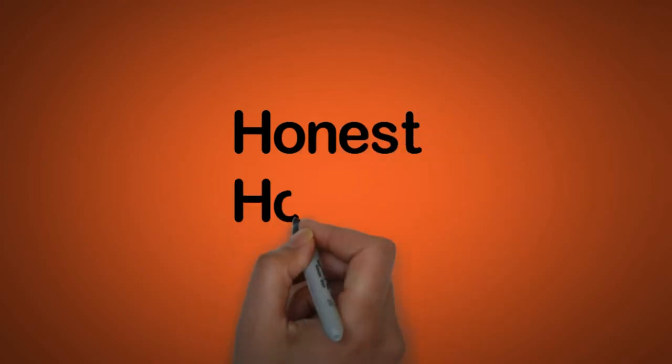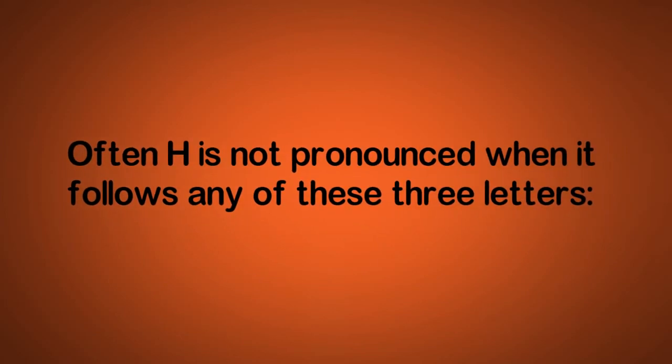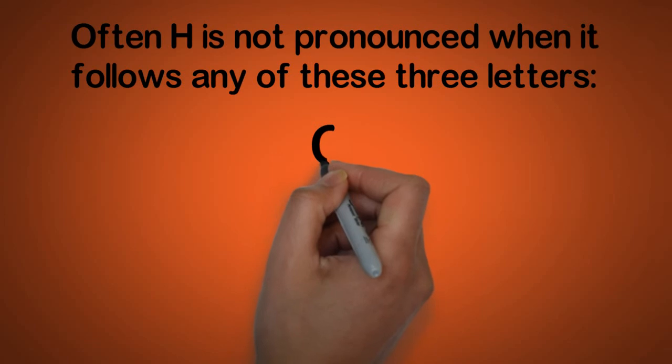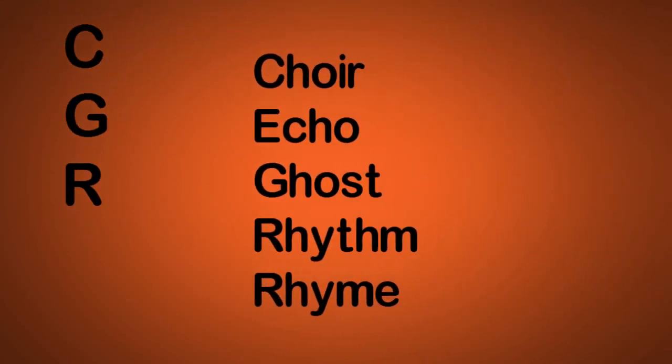And sometimes it is not pronounced at the start of a word like honest and hour. Sometimes the letter H is not pronounced when it follows any of these three letters: C, G, or R. Now, most of the time CH is pronounced, but on rare occasions it's not pronounced. The H is silent: choir, echo, ghost, rhythm, rhyme.